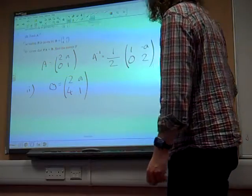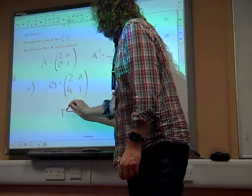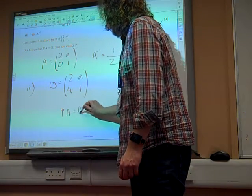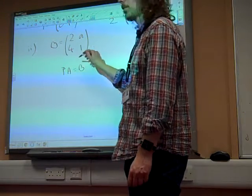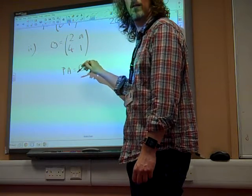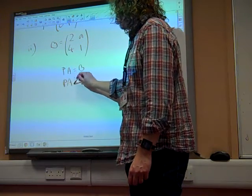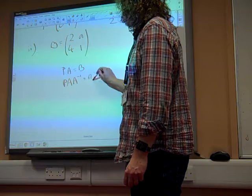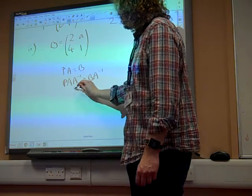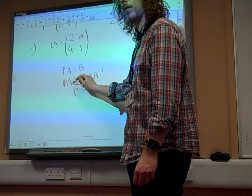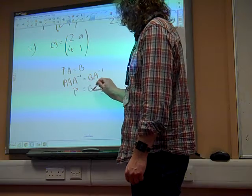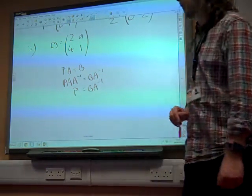So we're thinking if we know that P A equals B, if you post-multiply by the inverse of A, P A A inverse is B A inverse. So that's P times the identity matrix. So P on its own is B A minus 1.